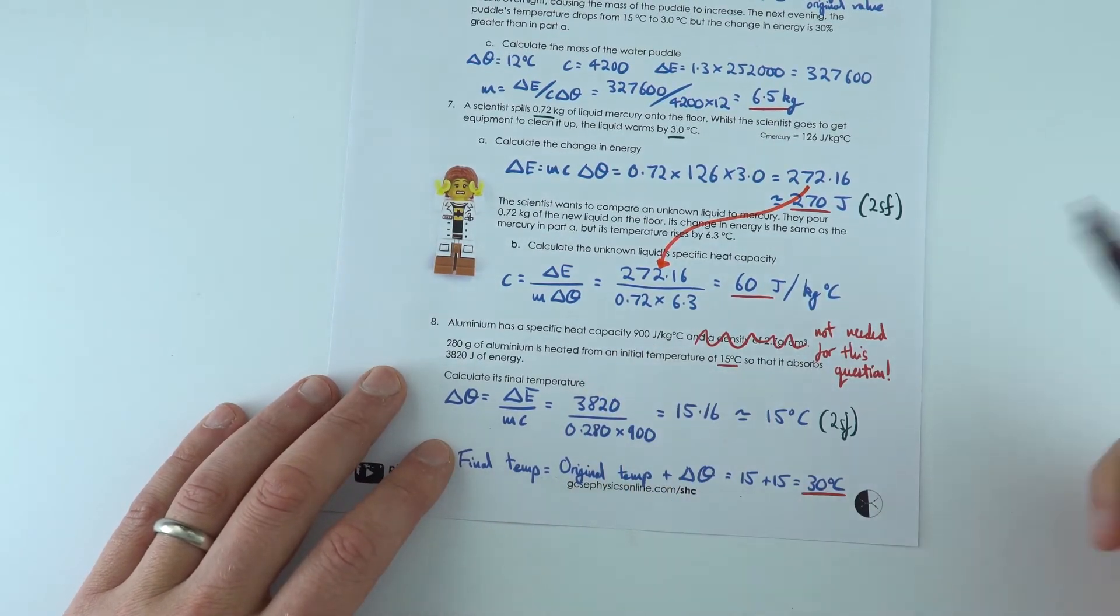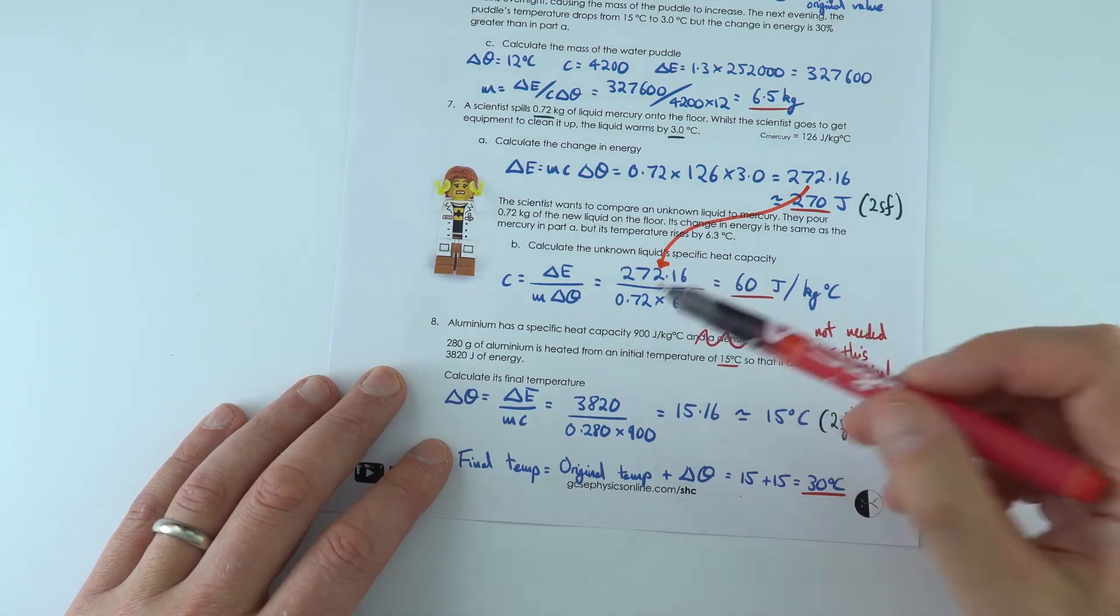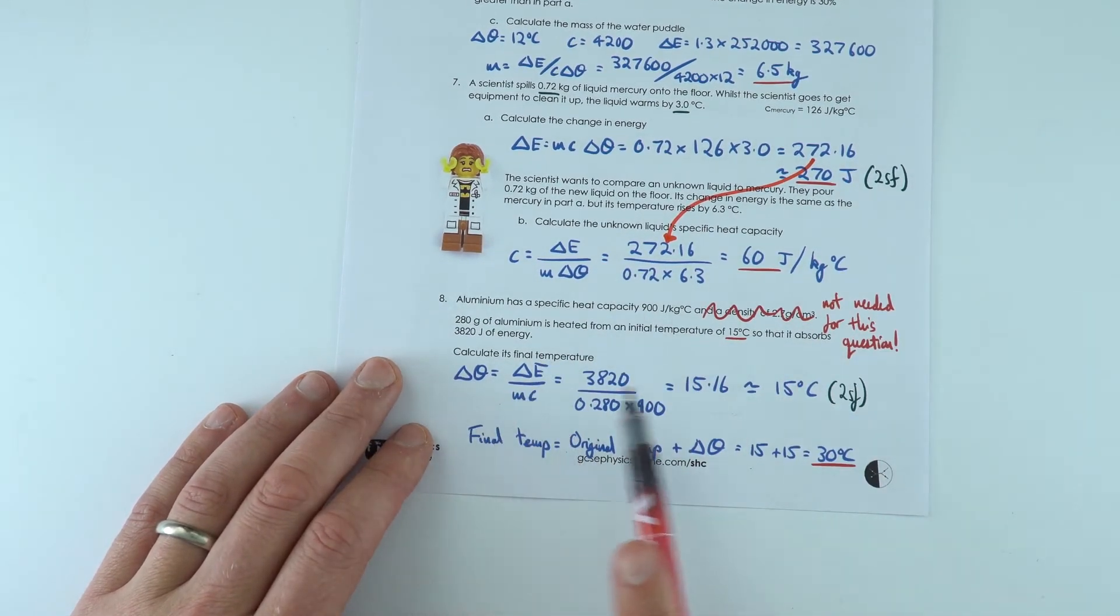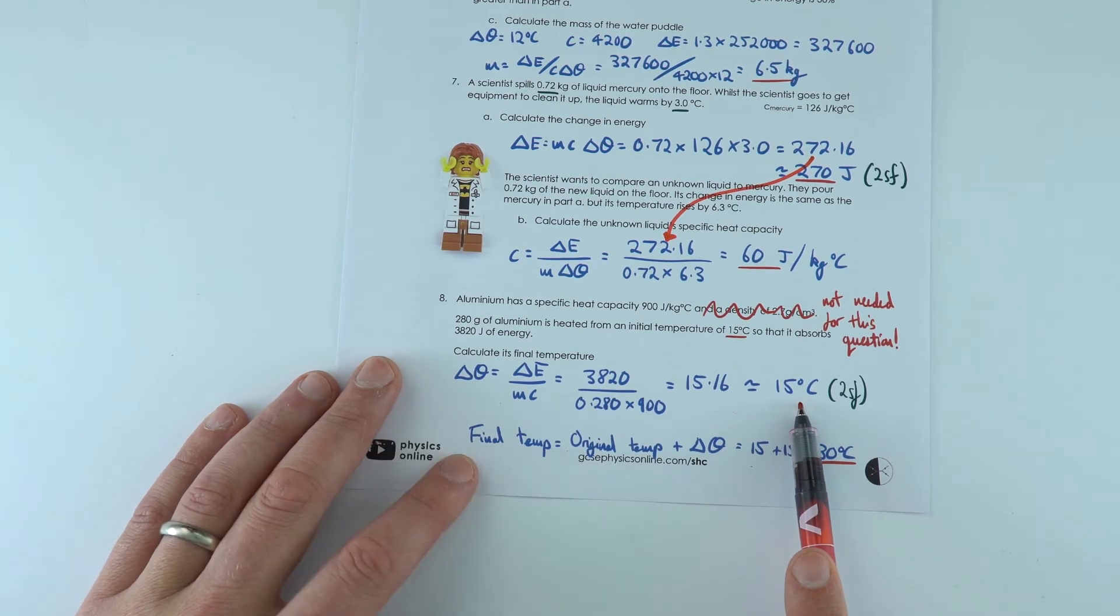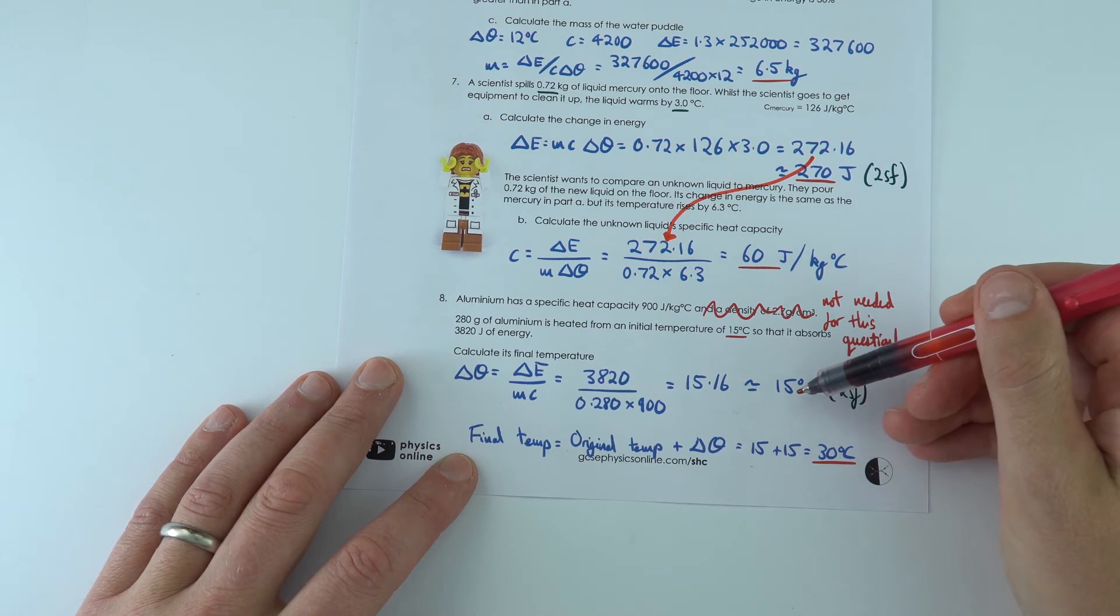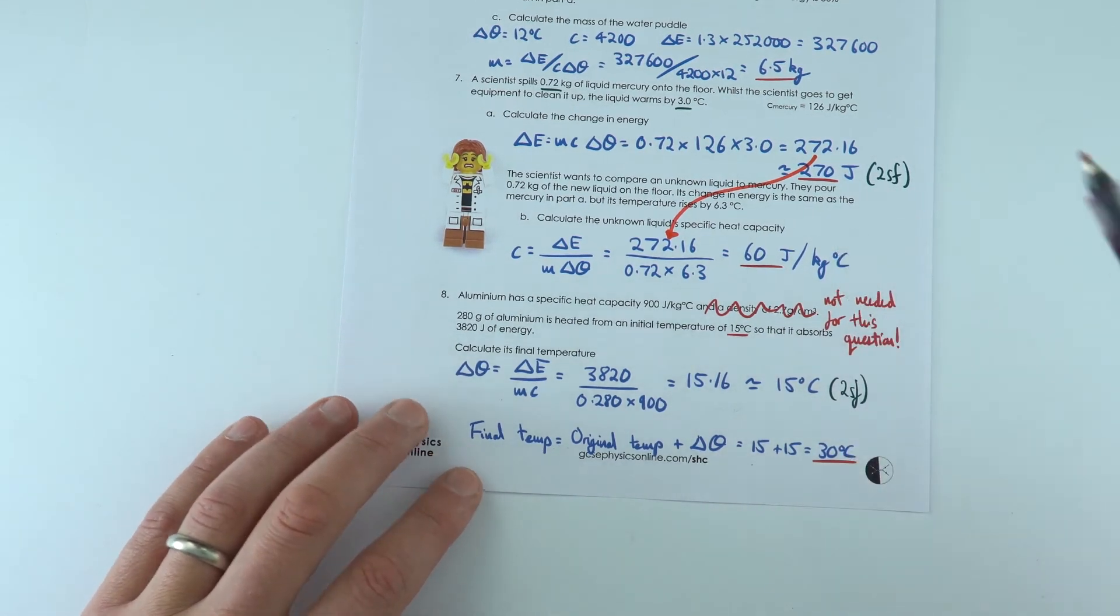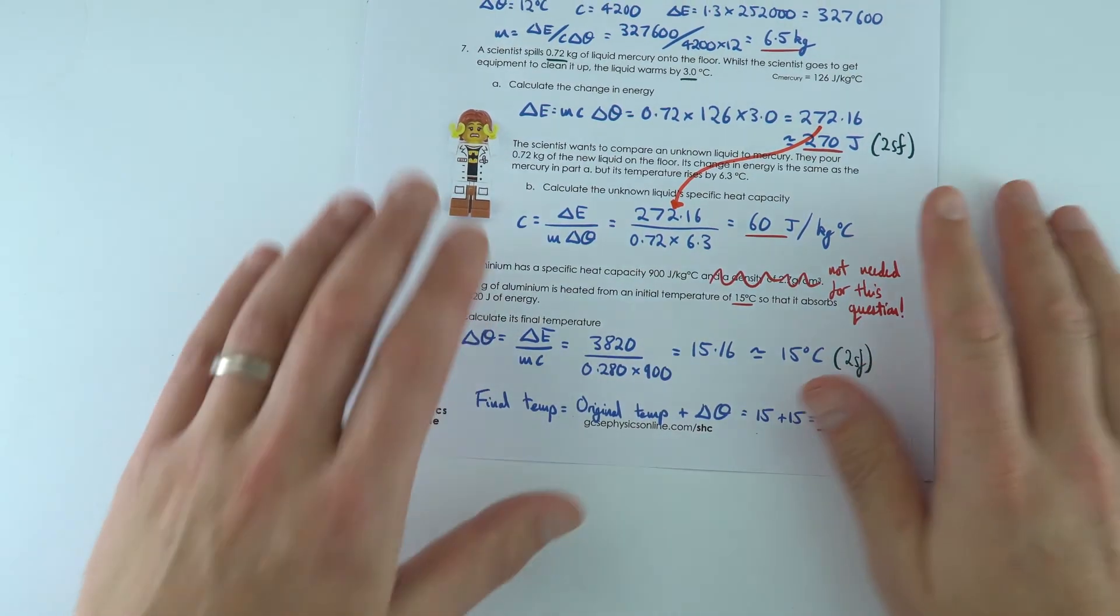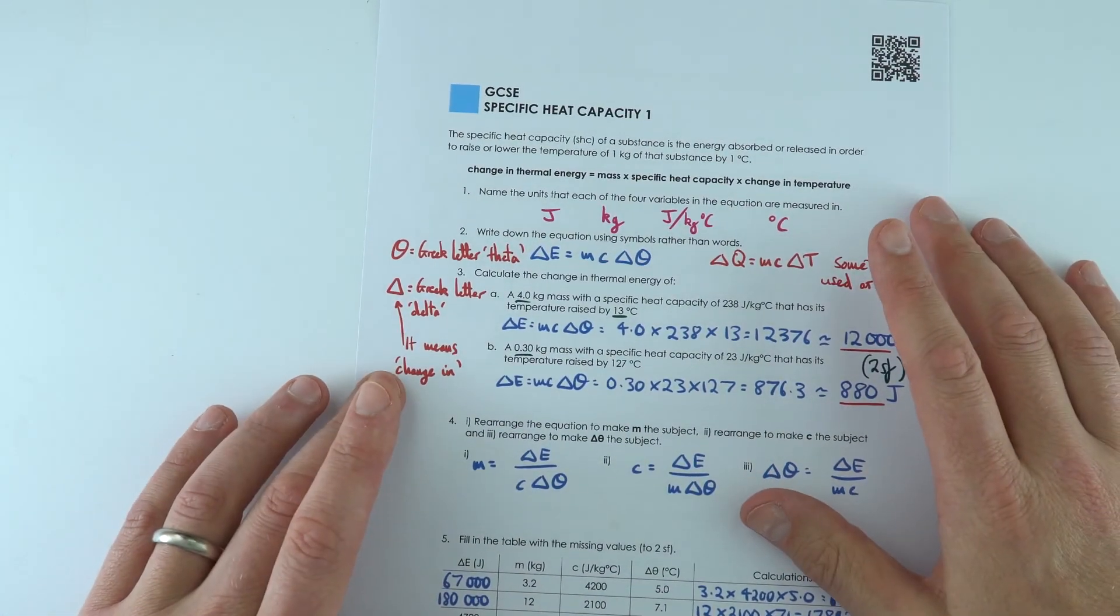And the last one about aluminum, there's a bit of a red herring. You don't need to know about the density when it comes to looking at specific heat capacity. So what we find is that the change in energy causes a change in temperature of about 15 degrees Celsius, but we want to know its final temperature. That's where you add the 15 to the initial value of 15 to get to the final value of 30. I suspect most people will do this bit correctly, but they forget to do that last step. So that's the first worksheet looking at specific heat capacity.